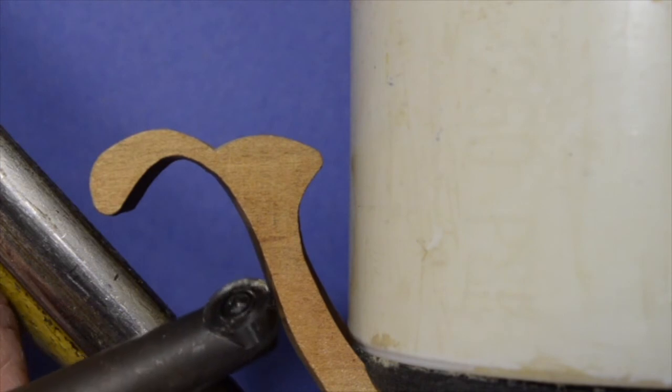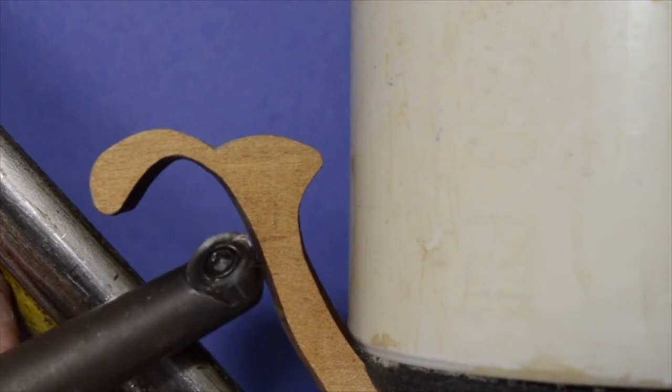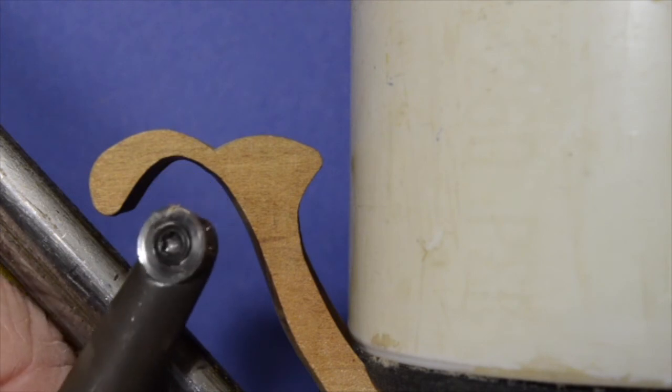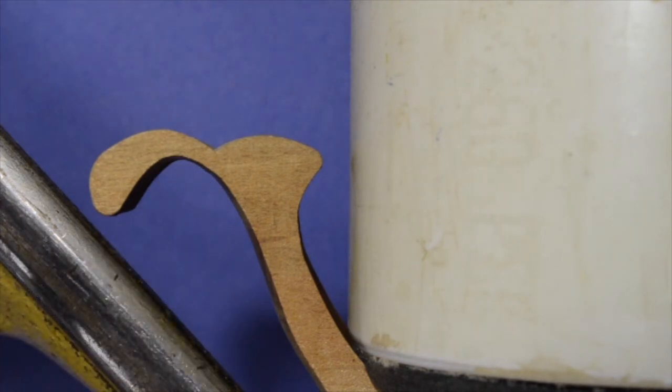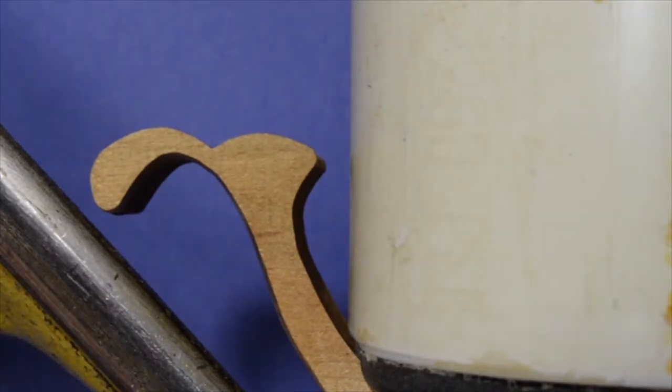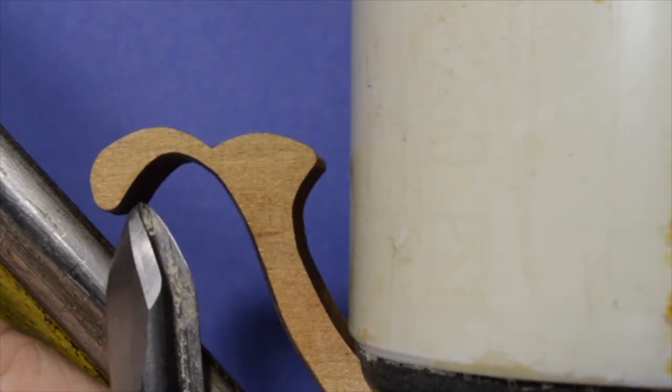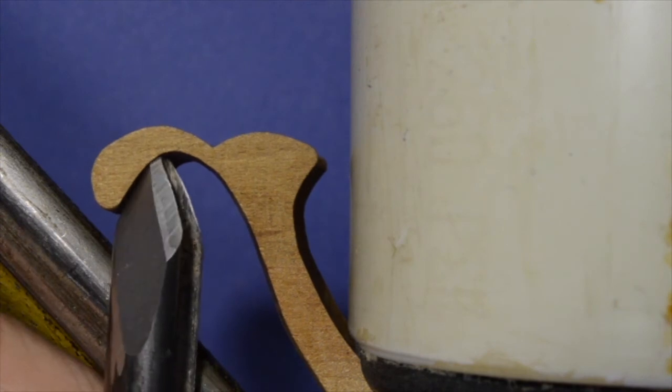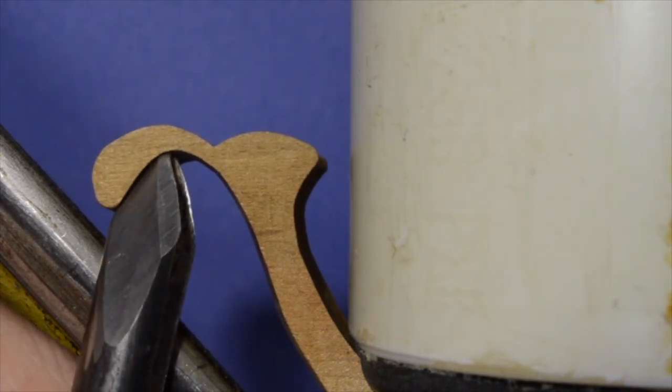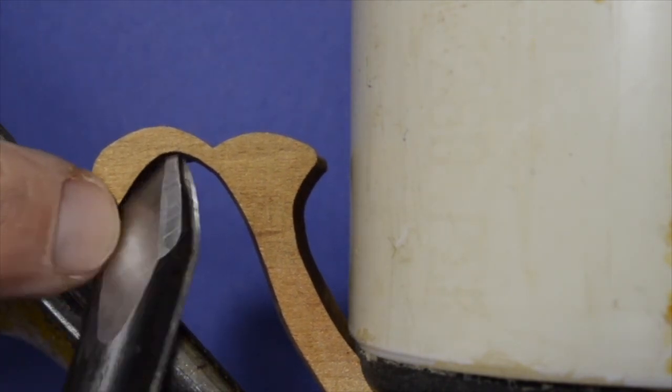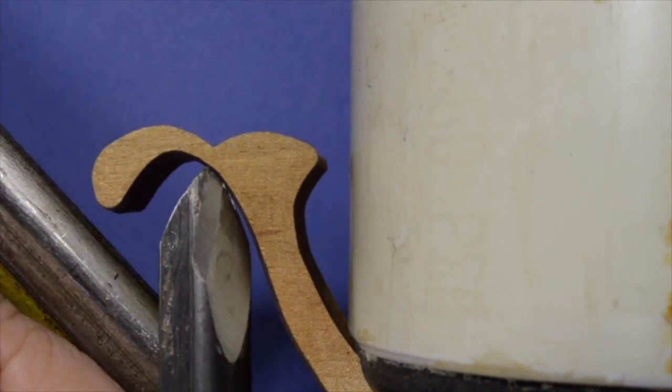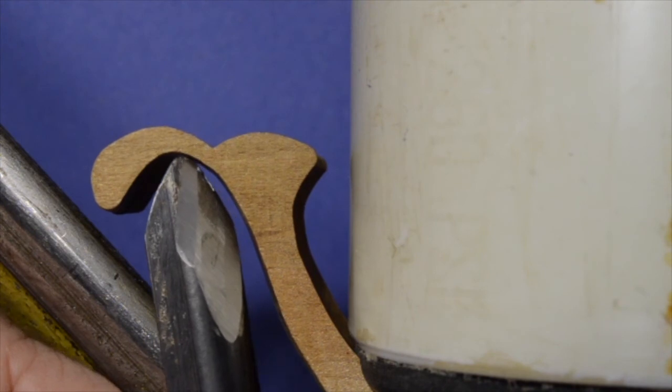I think you can see that with a bowl gouge, as I start right here and I get in right about there, I'm going to lose my bevel because it's hitting this corner. Coming back in this direction, I can probably get most of it right about in there.